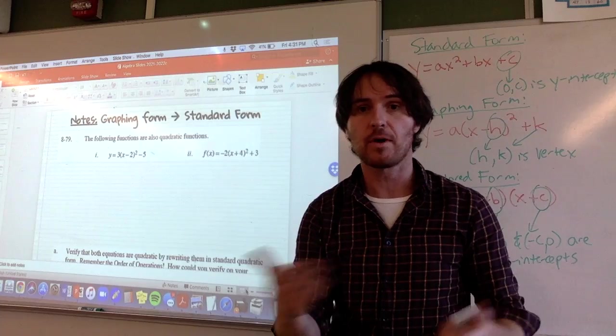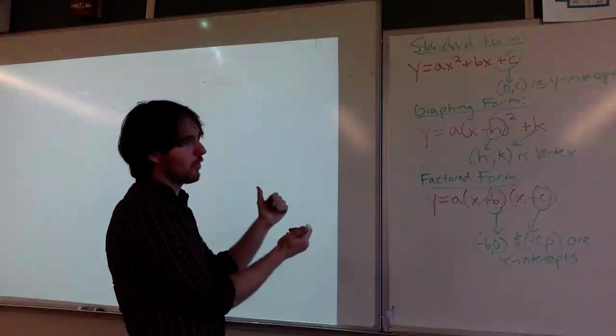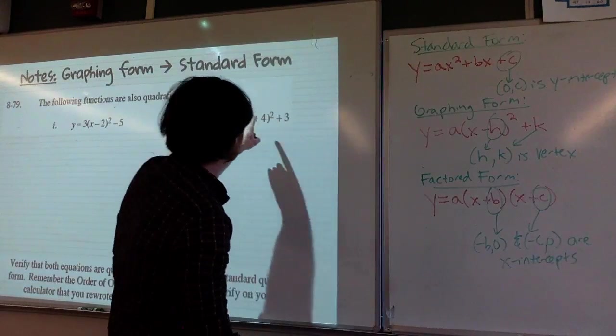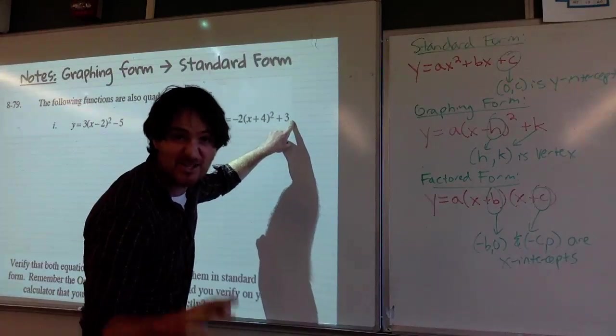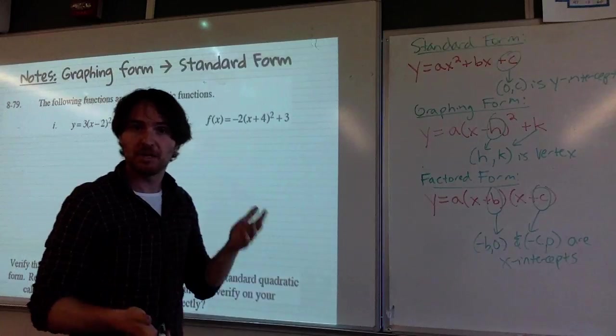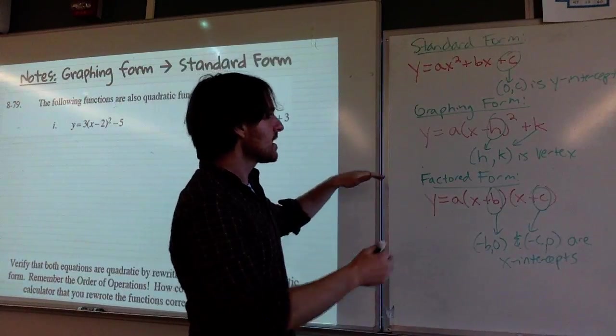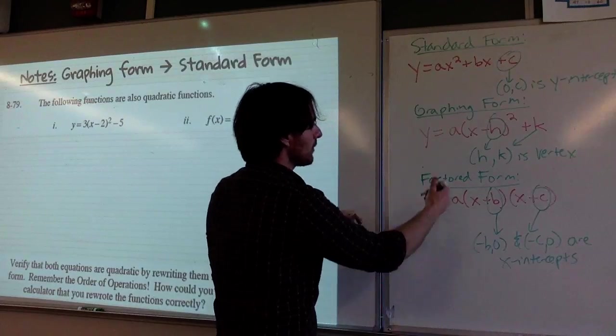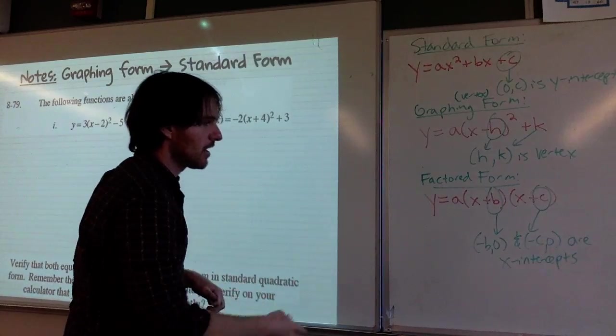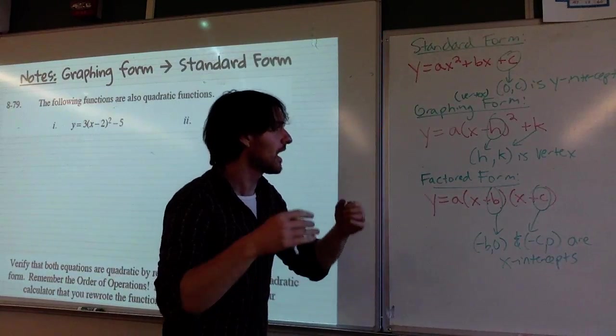So what we did in class today, we did several things. We used graphing calculators to figure out where x-intercepts were. We talked about the standard form, graphing form, and factored forms. The big one, the new one here, was graphing form. Graphing form is super useful because it helps us get the vertex. We also call it vertex form. I'll call it vertex form by mistake.